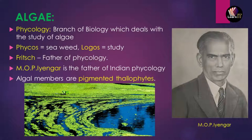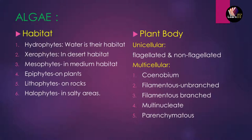Algae members are pigmented thallophytes, which means they have some kind of color in them. Before going into details, let us discuss how algae are divided into different categories: on the basis of habitat, plant body (unicellular or multicellular), nutrition, pigments, and reproduction — including vegetative, asexual, and sexual reproduction. Then we'll move to the classification of algae.